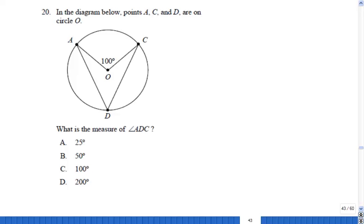Problem 20: In the diagram below, points A, C, and D are on circle O. What is the measure of angle ADC? How should we solve this problem? Well, let's start with the given facts.